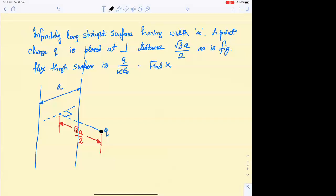A straight surface with a point charge q is placed at a perpendicular distance of √3a/2. If we draw the surface like this, and from the perpendicular bisector we place charge q, now I'll make a small geometrical construction.